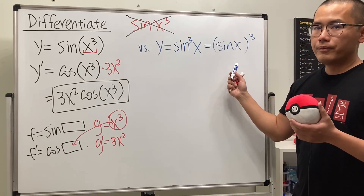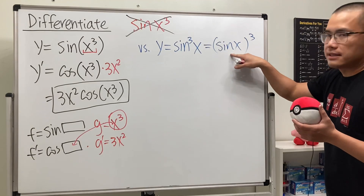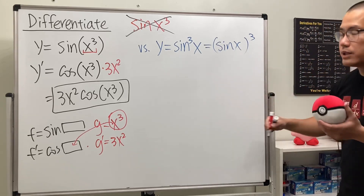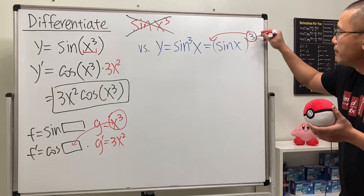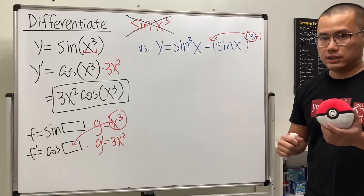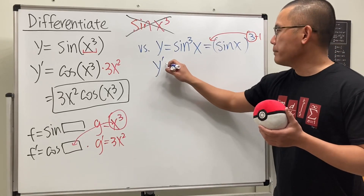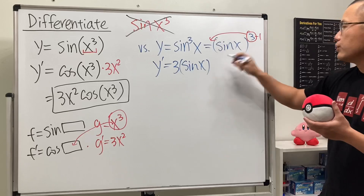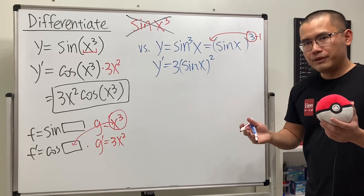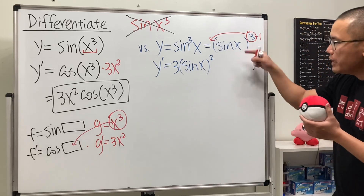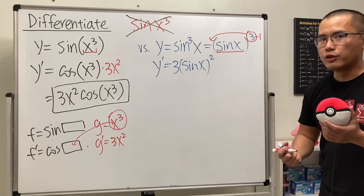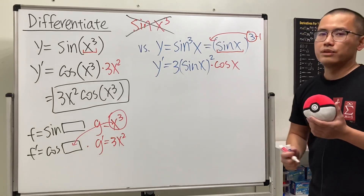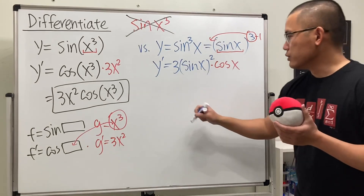For sine to the third power of x, the inner function is sine x and the outer function is the third power. We bring the power to the front and apply the power rule: y prime equals three times sine x to the second power. Now we use the chain rule — we look at the inside, sine x, and multiply by its derivative, which is cosine x. So we multiply by cosine x.